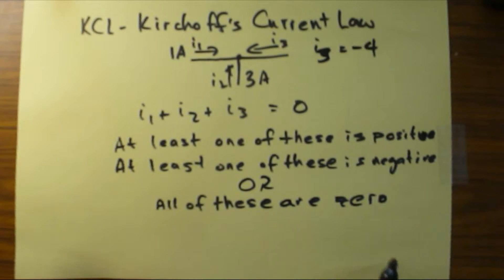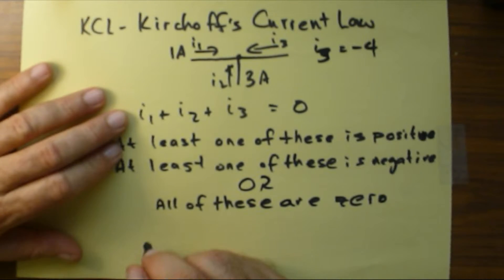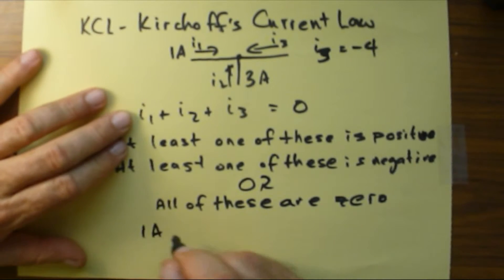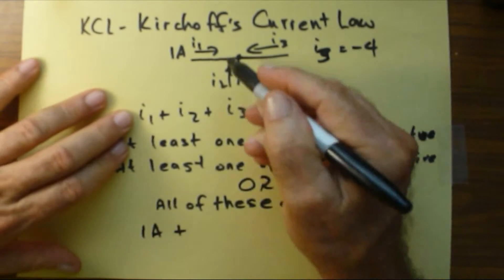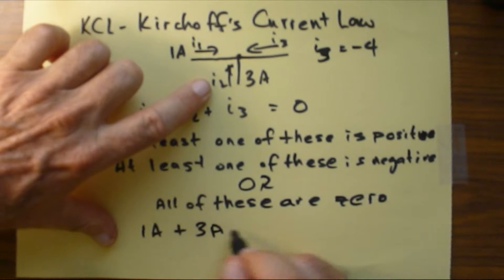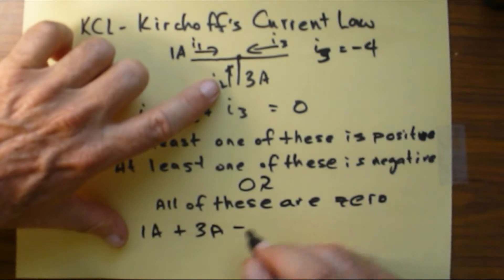So let's try this out. I1 is one amp, plus I2, which is three amps, minus four amps, equals zero.